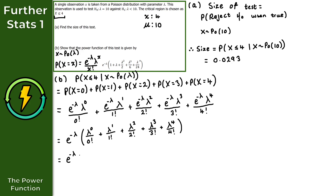Simplifying inside the bracket: λ^0 / 0! = 1/1 = 1; λ^1 / 1! = λ; λ² / 2! = λ²/2; λ³ / 3! = λ³/6 (since 3! = 6); λ⁴ / 4! = λ⁴/24 (since 4! = 24). So we obtain e^(−λ)(1 + λ + λ²/2 + λ³/6 + λ⁴/24), as required.